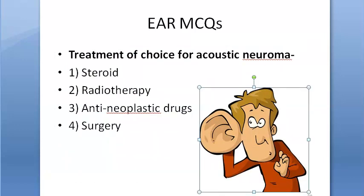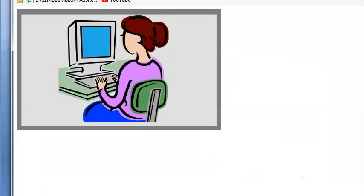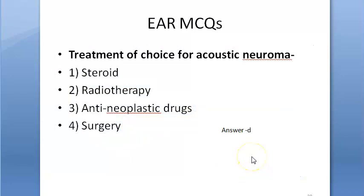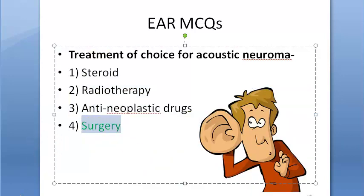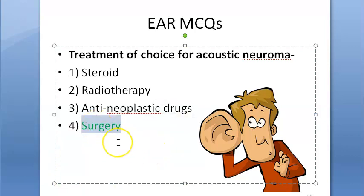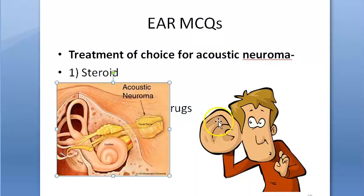Treatment of choice for acoustic neuroma — options are steroids, radiotherapy, anti-neoplastic drugs, or surgery. The answer is surgery. According to the textbook, surgical removal of the tumor is the treatment of choice. Various surgical approaches exist: middle cranial fossa approach, trans-labyrinthine approach, sub-occipital (retrosigmoid) approach, and combined trans-labyrinthine sub-occipital approach.